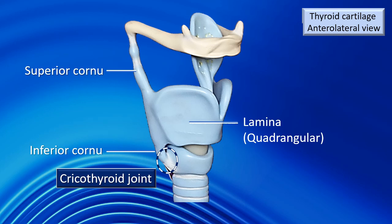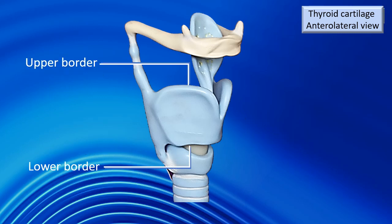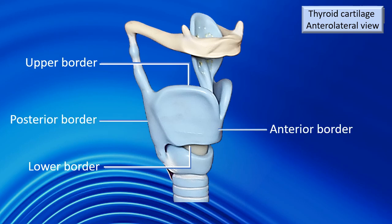The cricothyroid joint has been highlighted with a dashed circle. There is slight mobility at this joint. Now, borders: the lamina has an upper border and a lower border. Above the upper border is the hyoid bone; below the lower border is the cricoid cartilage. Similarly, it also has an anterior border and a posterior border.